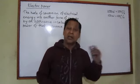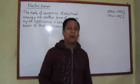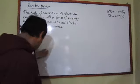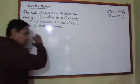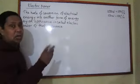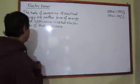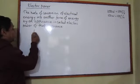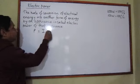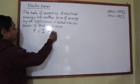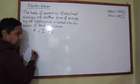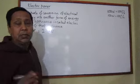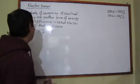This way we can understand electric power. Now I want to tell you about the equation which can be used to solve electric power problems. For example, electric power P is equal to I into V, where I is current and V is voltage. This equation can be used to solve numerical problems related with electric power.